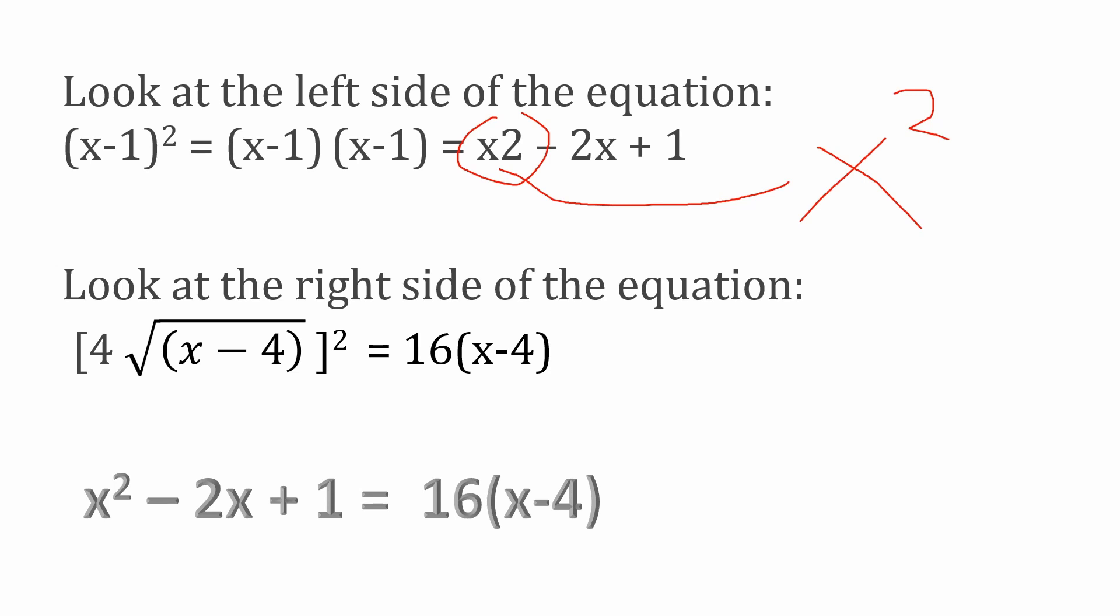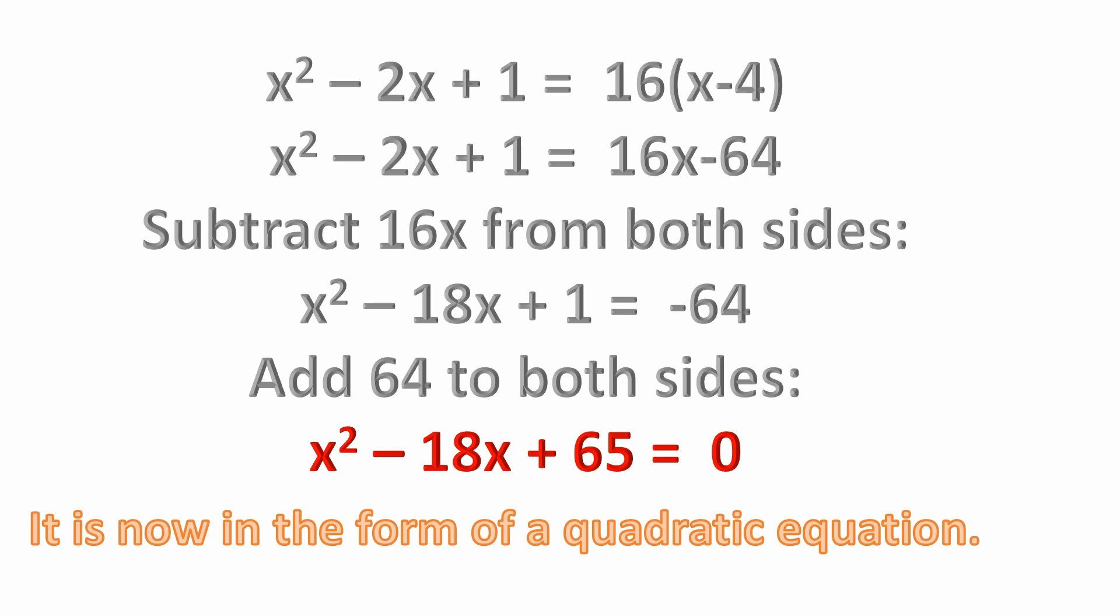So now if you look at the left and the right sides of our equation, we have x squared minus 2x plus 1 equals 16 times the quantity x minus 4. So if we go on from there and then work on simplifying this, we've got x squared minus 2x plus 1 equals 16x minus 64. We're just multiplying the 16 through what's in the parentheses. So 16 times x is 16x, 16 times minus 4 is minus 64.